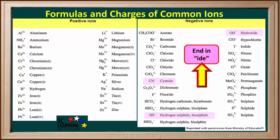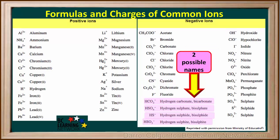The other ions whose names end in -ide on this table are not polyatomic ions — they are ions of a single element, like bromide, chloride, etc. Notice that four of the polyatomic ions have two possible names separated by a comma, and either name can be used. For example, HCO3- can be called hydrogen carbonate or bicarbonate.